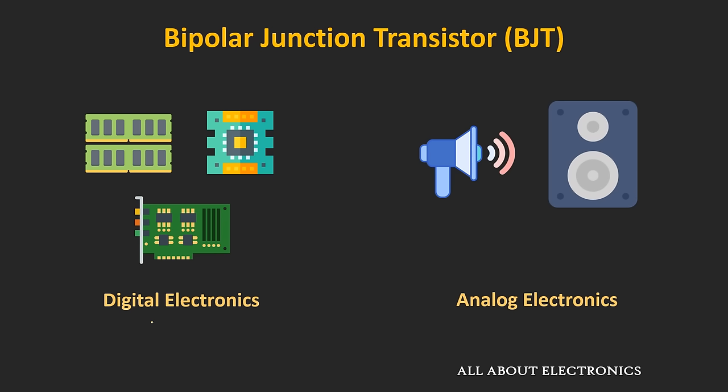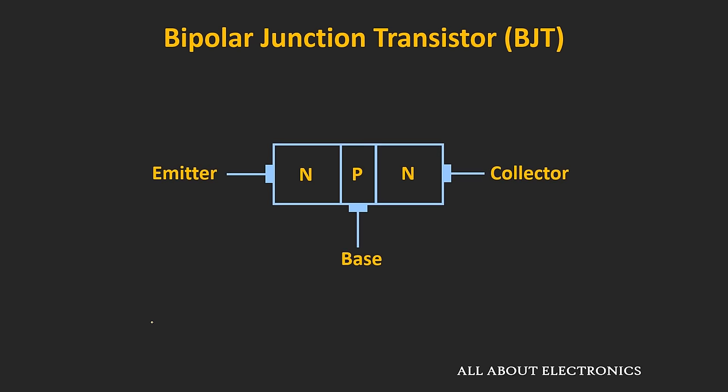Nowadays, the field-effect transistors are widely used in the electronic industry. But still, the BJTs are extensively used, and anyone who is interested in electronics should have some basic knowledge of BJTs. In this bipolar junction transistor, there are three doped regions: the emitter, the base, and the collector. And based on the doping of these three regions, it is known as either an NPN or a PNP transistor.